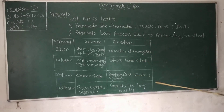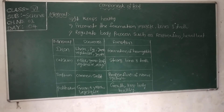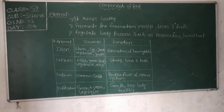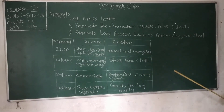The next mineral is sodium, which is found in common salt used in our cooking. Its function is the proper functioning of our nervous system — it helps to control the nervous system. The last mineral is potassium, which is found in green and yellow vegetables, and it functions to help our body grow and stay healthy.